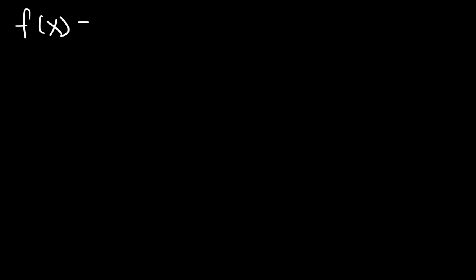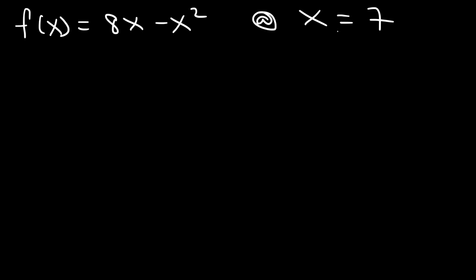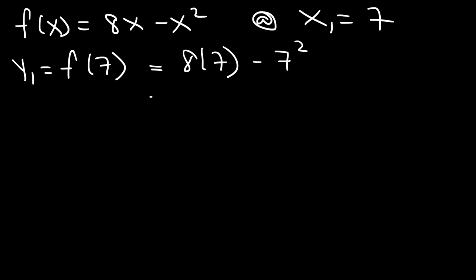Let's work on another example. So let's say that f of x is equal to 8x minus x squared. Write the equation of the tangent line at x equals 7. Go ahead and work on this problem — feel free to pause and see if you got the concept. So the first thing I'm going to do is calculate the y value. y1 is going to equal f of 7, which is going to be 8 times 7 minus 7 squared. 8 times 7 is 56, 7 times 7 is 49, and 56 minus 49 is 7. So y1 is 7.